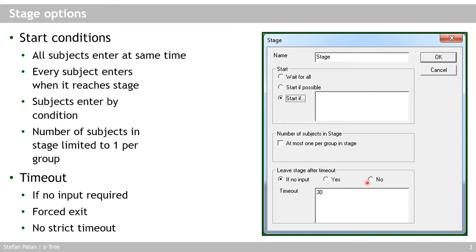In the timeout area you can choose three options. The first is 'default: if no input' — CETRI will look into the stage and if there is an input field it will not force people out even if the timeout has been reached, because they still have to make their entry. If there is no input field, they would be forced out to a waiting screen. Selecting 'yes' means they are forced out even if there is an input field. Selecting 'no' means they will never be forced out because of the timeout.